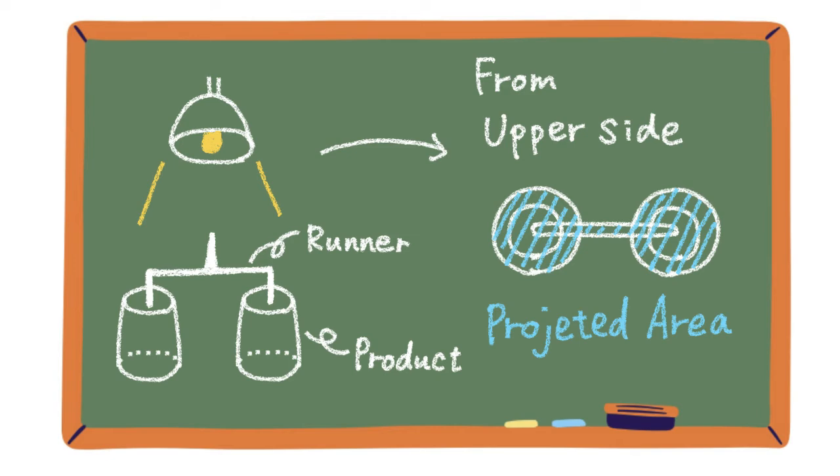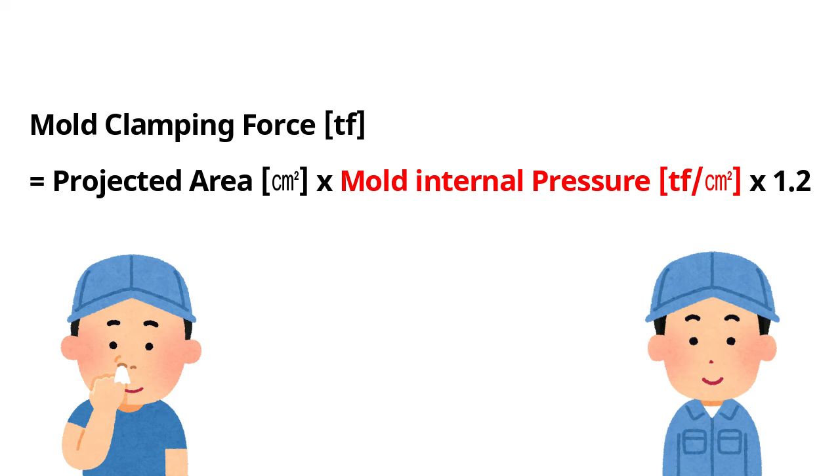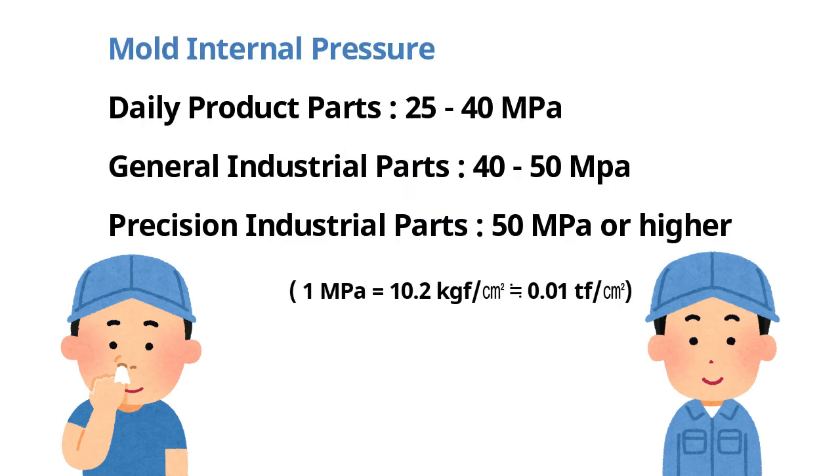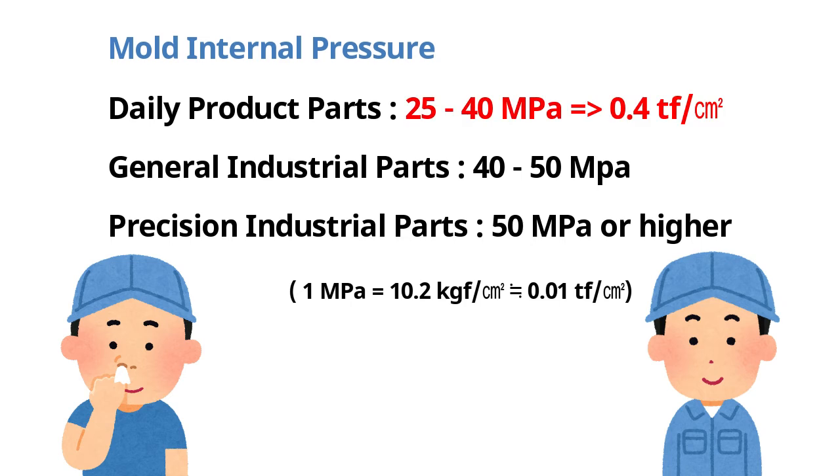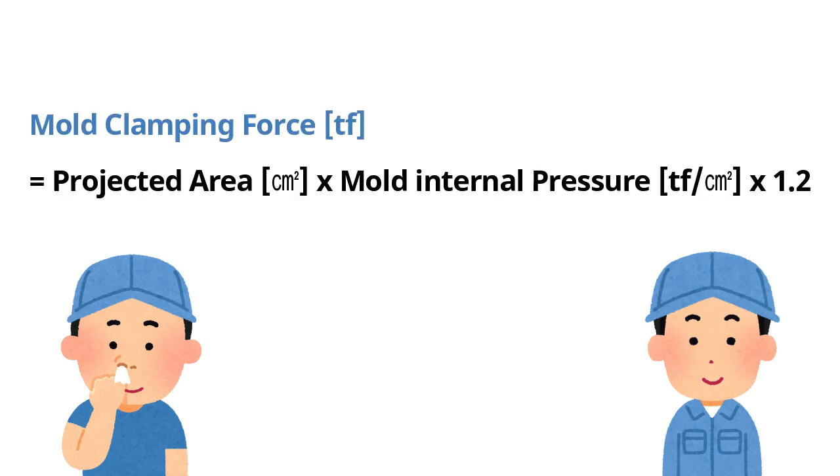Next is mold internal pressure. Depending on product thickness and preciseness, estimated mold internal pressure would be different. This time the product is a household product, so let's calculate as 40 megapascal. Then input the figures in the formula. Wait, is this safety ratio 1.2 essential?